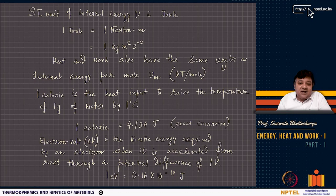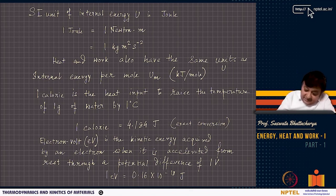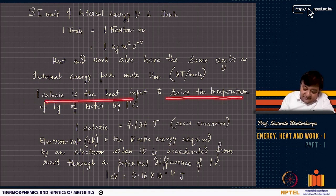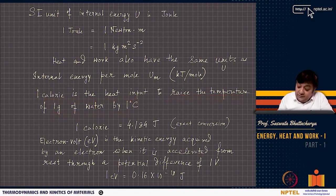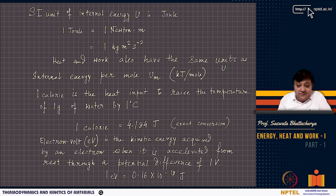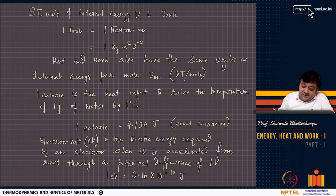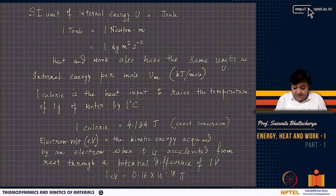Calories are still a very popular unit for heat. 1 calorie is defined as the heat input required to raise the temperature of 1 gram of water by 1 degree Celsius. And 1 calorie equals 4.184 joules — this is an exact conversion.